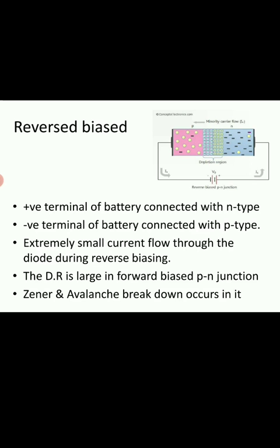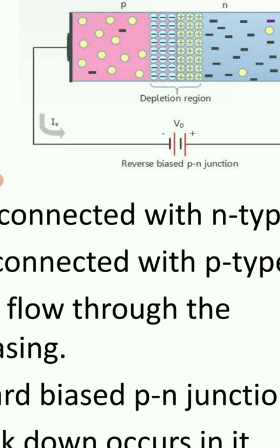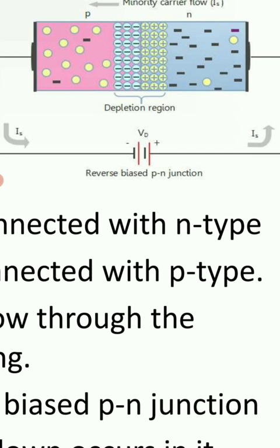The depletion region is growing. The electric field is created. The barrier potential will increase. As the width of the depletion region widens, the barrier potential will increase. Due to which, there will be very small reverse current flow, and that will be because of minority charge carriers. You can see in the diagram there is an arrow given for minority carrier flow, because the barrier potential goes to increase.